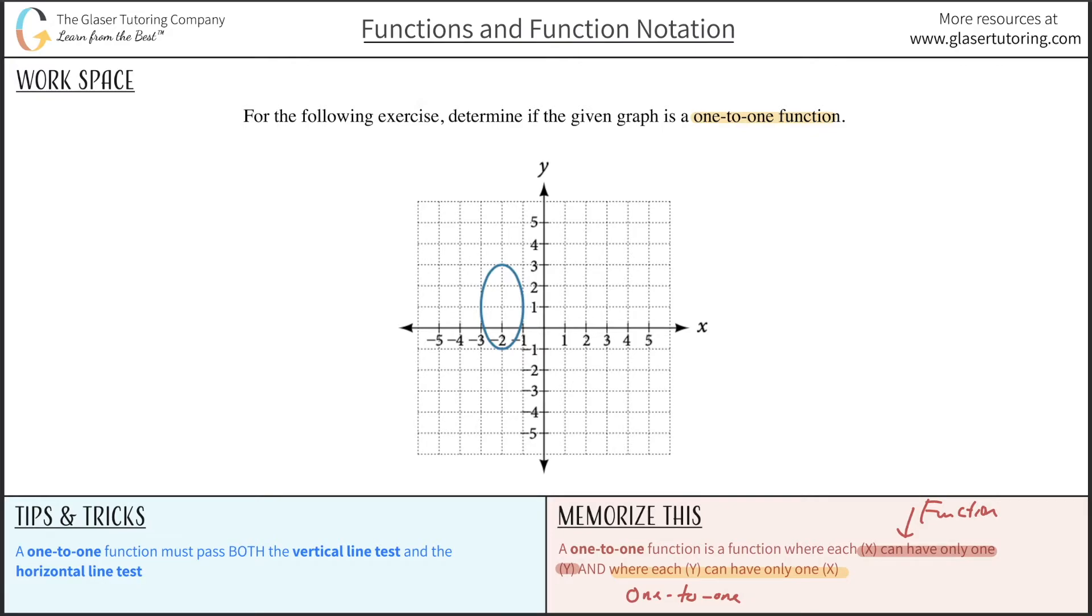So now, if I were to see if this thing is even a function in general, I would draw a vertical line down the graph and see if it intersects in two or more places. And it does. It intersects in two or more places, and that violates the definition of a function. Because the x value of negative two has two corresponding y values. That's a no-no for a function.